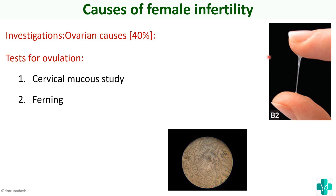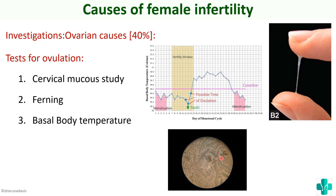Next is the ferning pattern — if you place cervical mucus under the microscope you can see a fern-like structure, which is another test for ovulation. You can also assess basal body temperature: just during ovulation there is an increase in body temperature. Finally, you can do hormonal studies to determine whether there is an LH surge or whether hormone levels are optimal for ovulation. These are the different tests for ovulation.